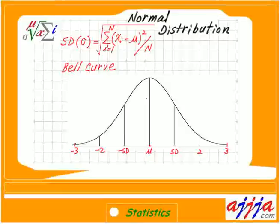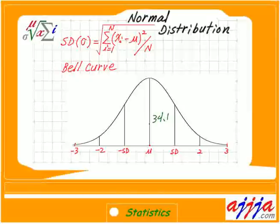In this normal curve, within one SD, we must remember this number: 34.1% is right in this category. What about the negative side? Also 34.1%. The total percent underneath this curve is 100%, which probability-wise is one.